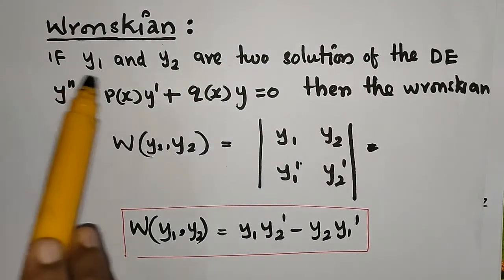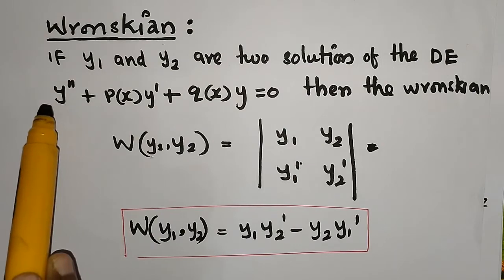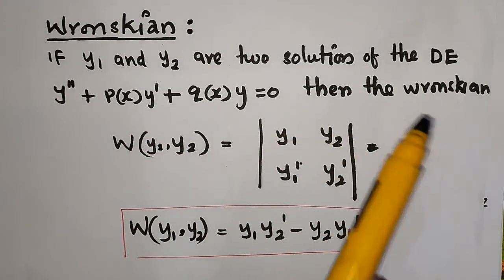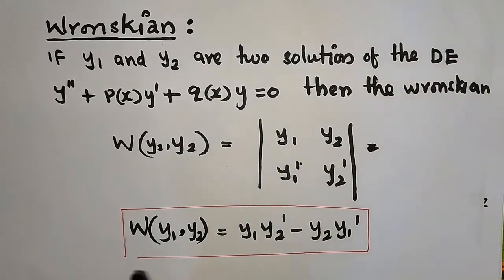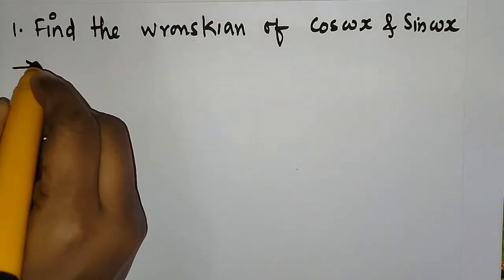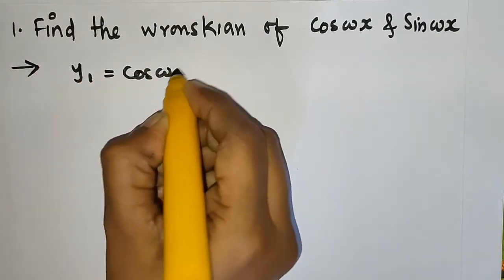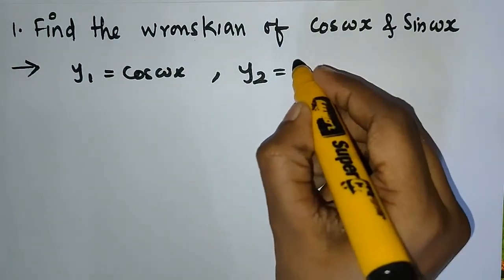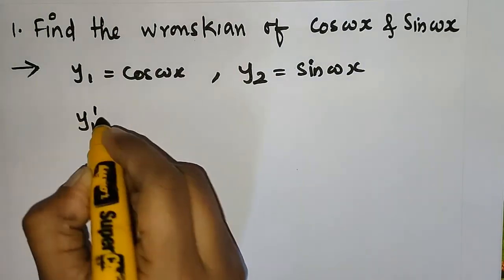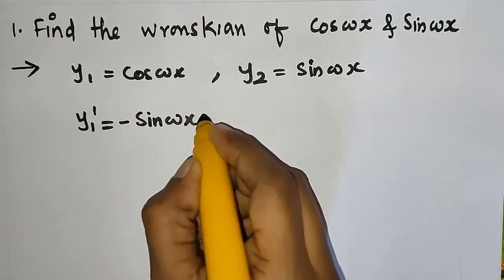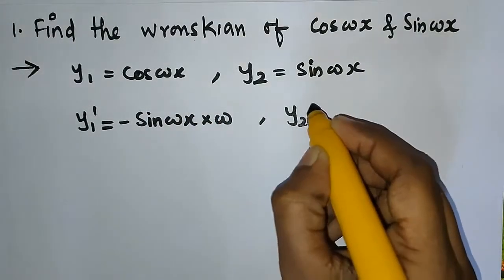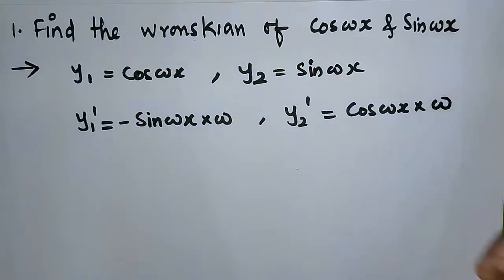The Wronskian is given by the determinant of y₁, y₂, y₁', y₂'. Now we find the Wronskian of cos(ωx) and sin(ωx). So y₂' is the derivative of sin(ωx), which is ω·cos(ωx), and y₁' is the derivative of cos(ωx).